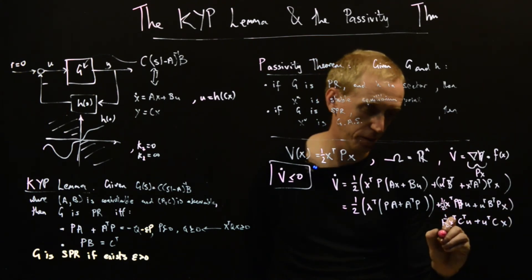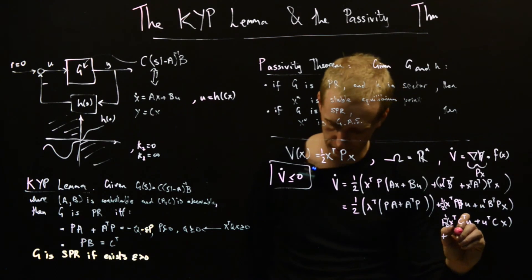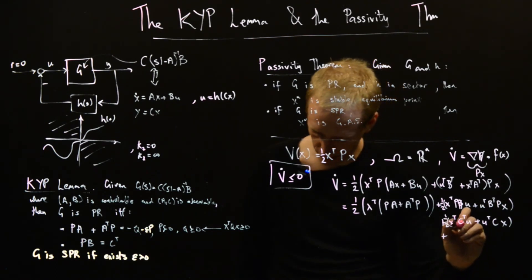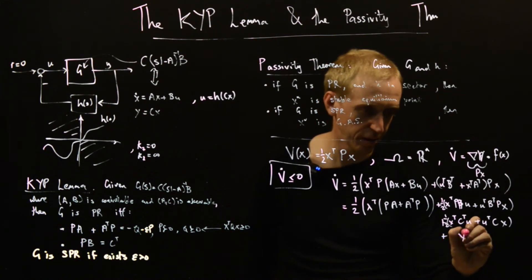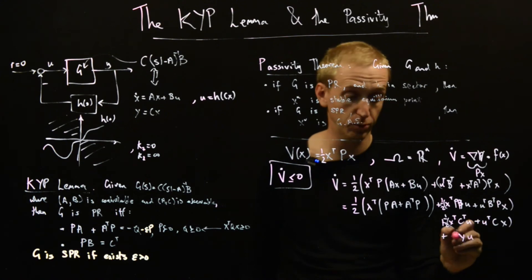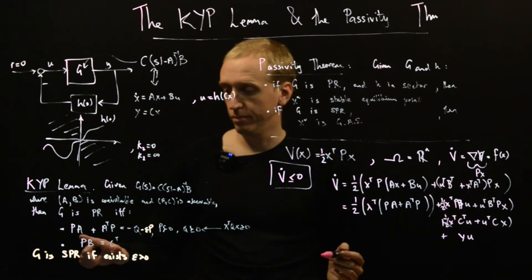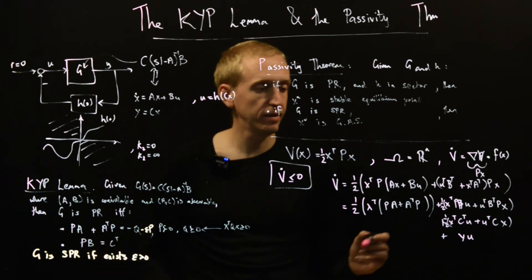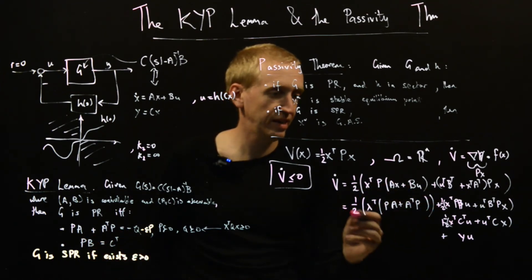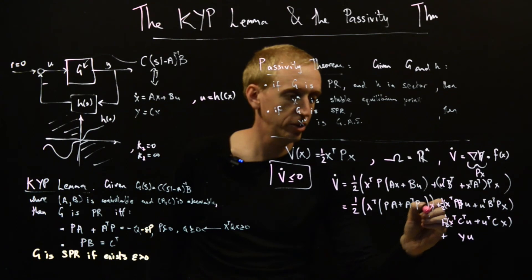What is C x? Well, C x is just equal to y, so this whole thing is just equal to y transpose u. But y and u are both scalars, so this is just equal to y times u. So we've used our second equation here. How can we take advantage of our first equation?